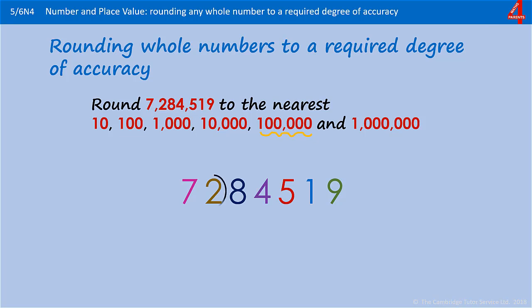In the hundred thousands column we have two hundred thousand, and in the ten thousands column we have 80,000, which means we need to round up. And that becomes 7,300,000.